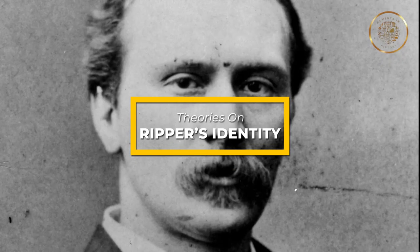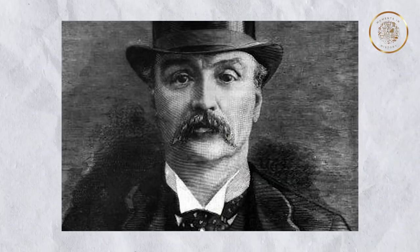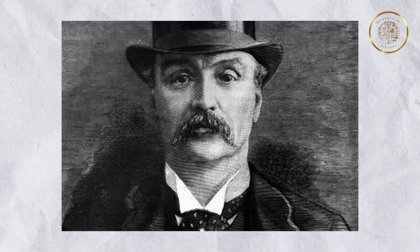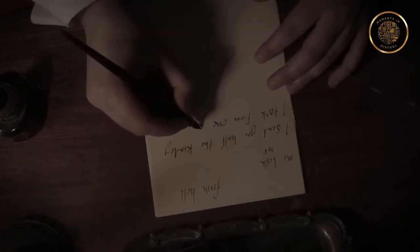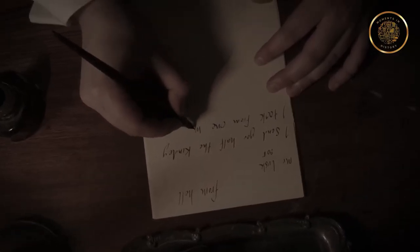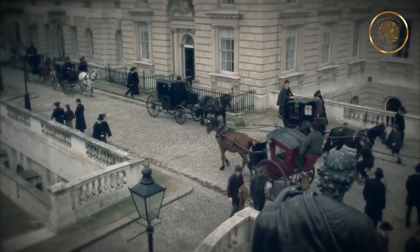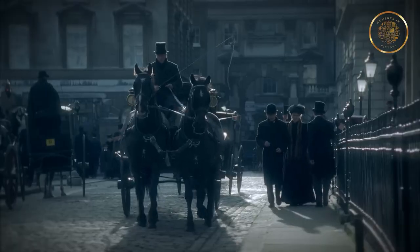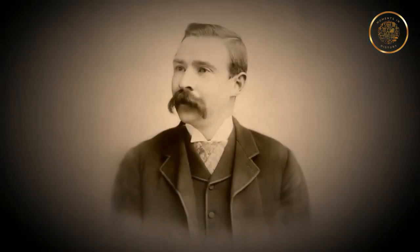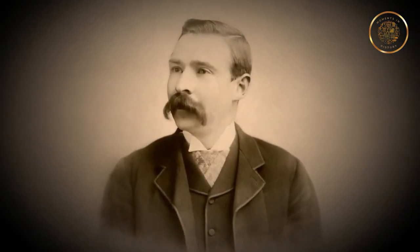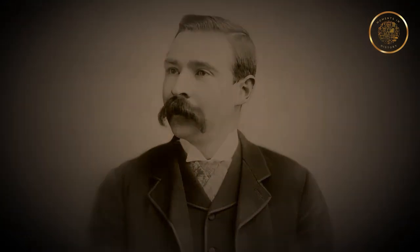Now that we have explored the horrifying crimes and possible motives of Jack the Ripper, it's time to delve into the elusive killer's identity. Countless theories have emerged over the years attempting to unmask the face behind the notorious figure. While there are no definitive answers, we have gathered six of the most popular and realistic theories for you.